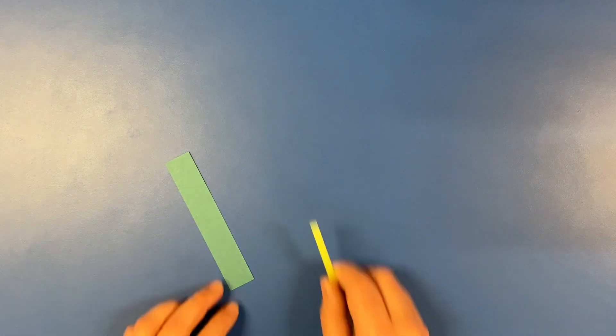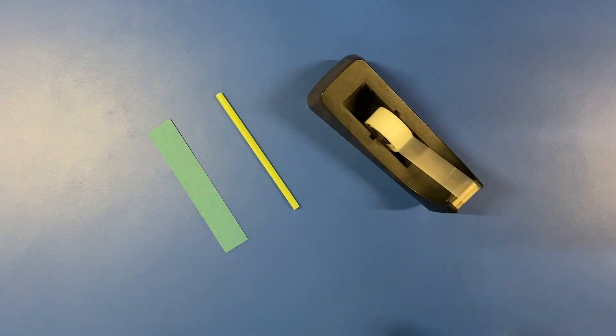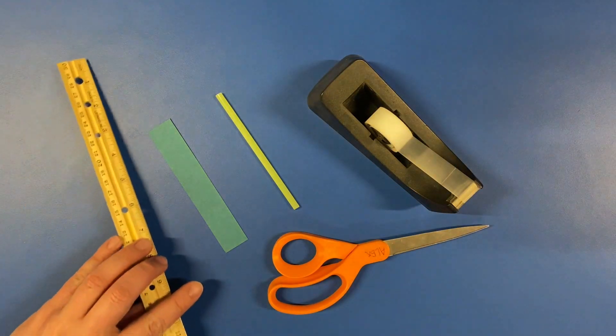Alright, let's start with the whirlybird. For this, we will need a small straw and a piece of paper from the baggie. You will also need some tape, scissors, and even a ruler if you've got it.